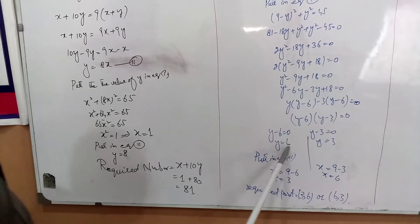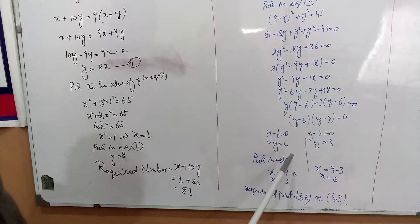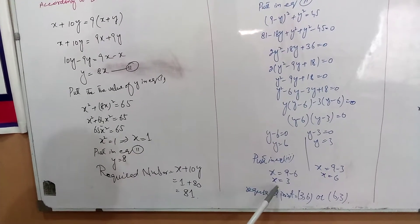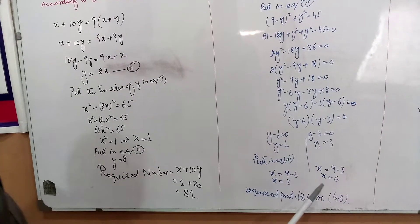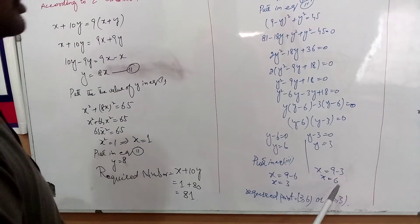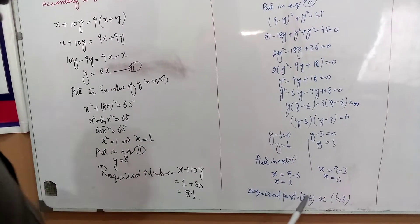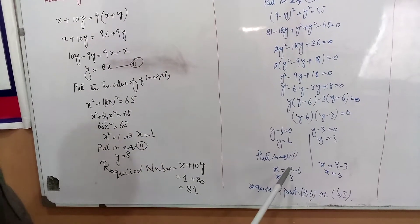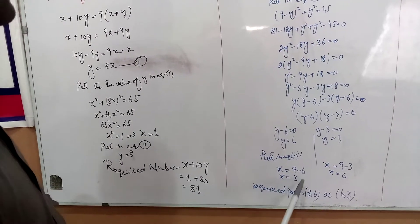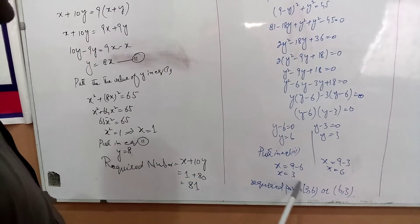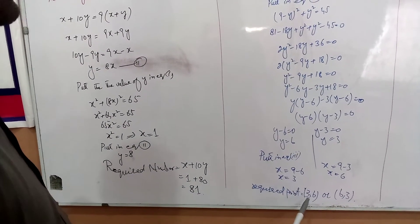Substituting the values of y back into the first equation, when y equals 3, x equals 6, and when y equals 6, x equals 3. So the coordinates of the point are (3, 6) or (6, 3).